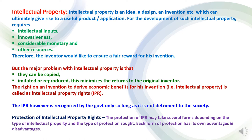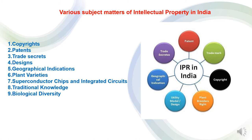The protection of intellectual property rights may take several forms depending on the type of intellectual property and the type of action sought. Each form of protection has its own advantages and disadvantages. There are various types of intellectual property in India which can be described as copyrights, patents, trade secrets, designs, geographical indications, plant varieties, semiconductor chips and integrated circuits, traditional knowledge, cultural knowledge, biological diversity, trademarks, and others.